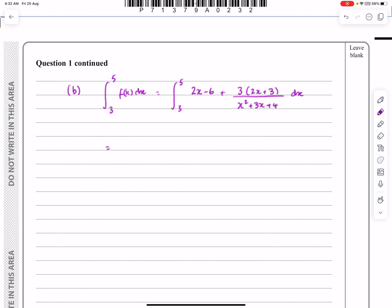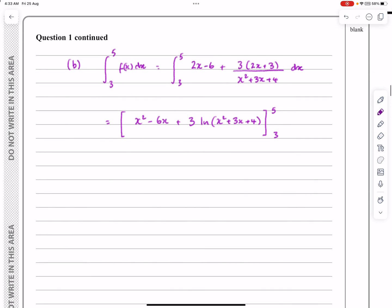So if we're going to integrate this, the integral of 2x is x squared, the integral of minus 6 is minus 6x, and the integral of 3 times 2x plus 3 over x squared plus 3x plus 4 is going to be 3 log, and then the function, which in this case is x squared plus 3x plus 4. All between the limits of 5 and 3 here. If that's too complicated to you, go back and look at a different one of my videos, which is actually explaining how to do the reverse chain rule.